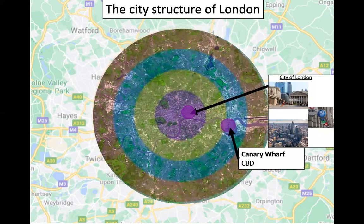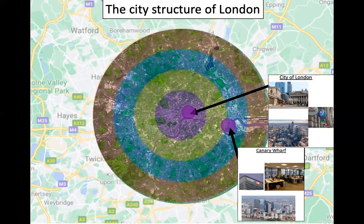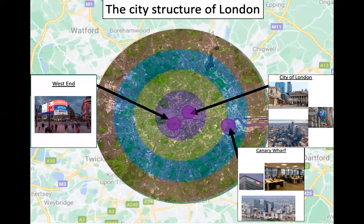London is a bit different because it has another CBD — Canary Wharf. This is a financial district and home to the headquarters of many large banks and other financial companies, developed in the 2000s from a declining Docklands area. A third CBD is the West End, which is full of entertainment and lots of exciting things to do. So London actually has more than one CBD, and at least one is situated outside of where it would be expected.